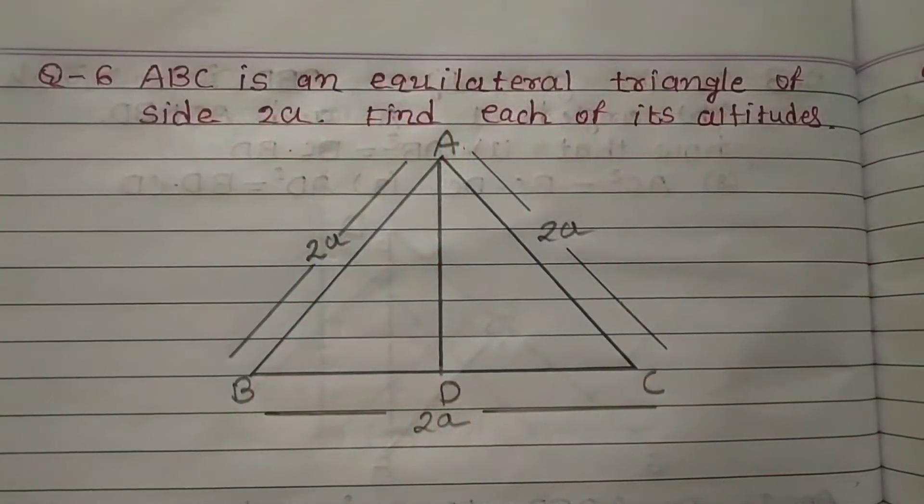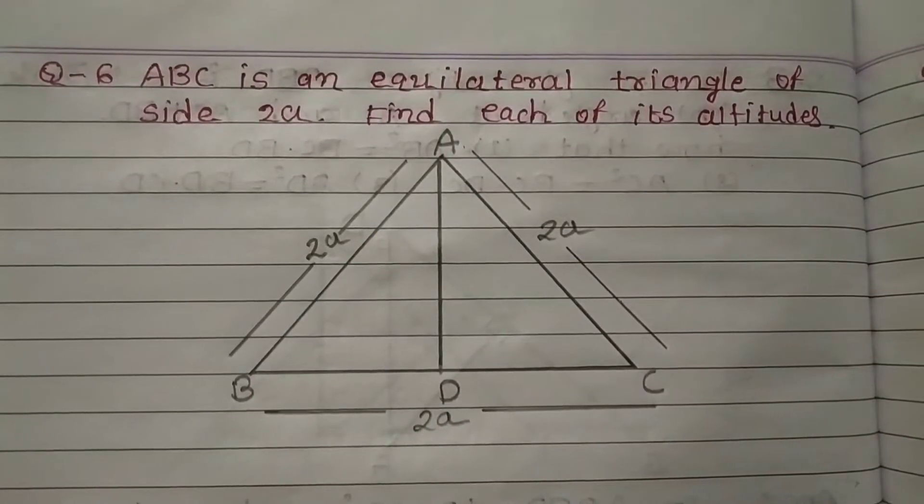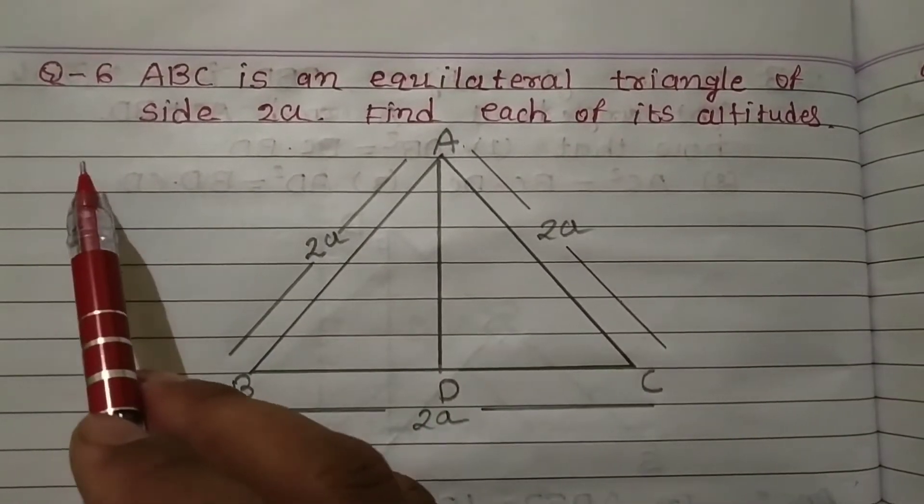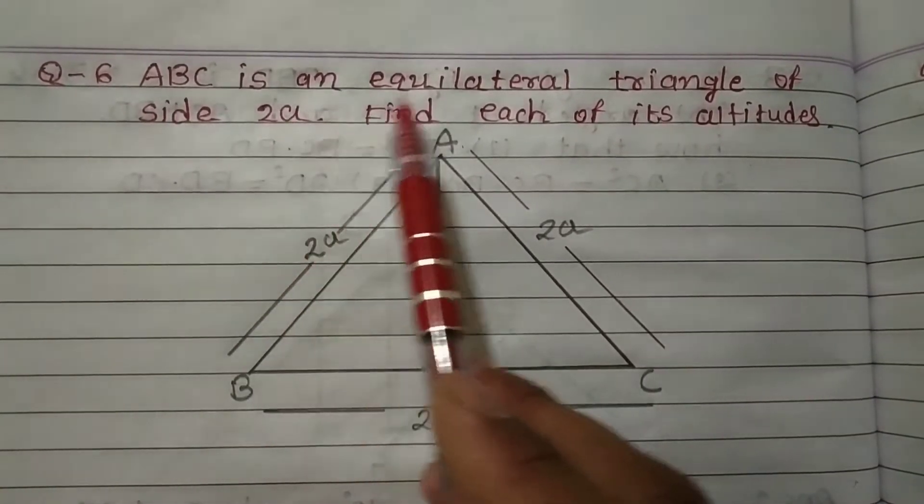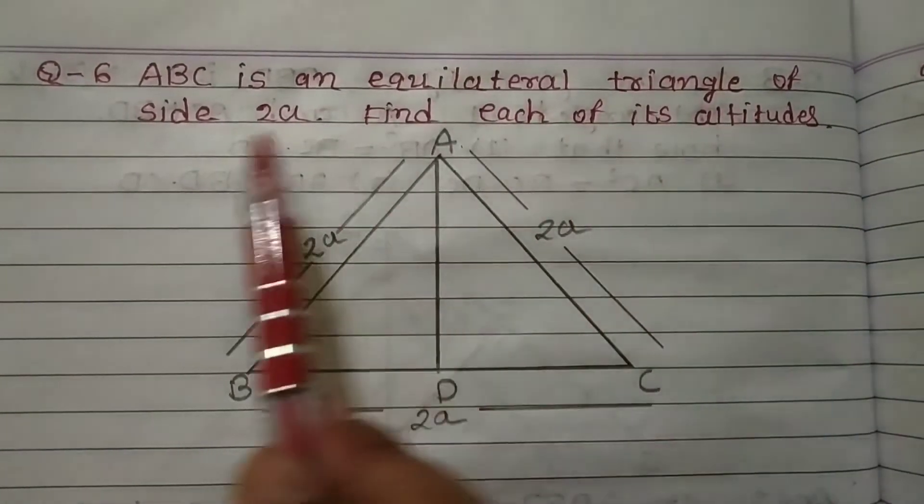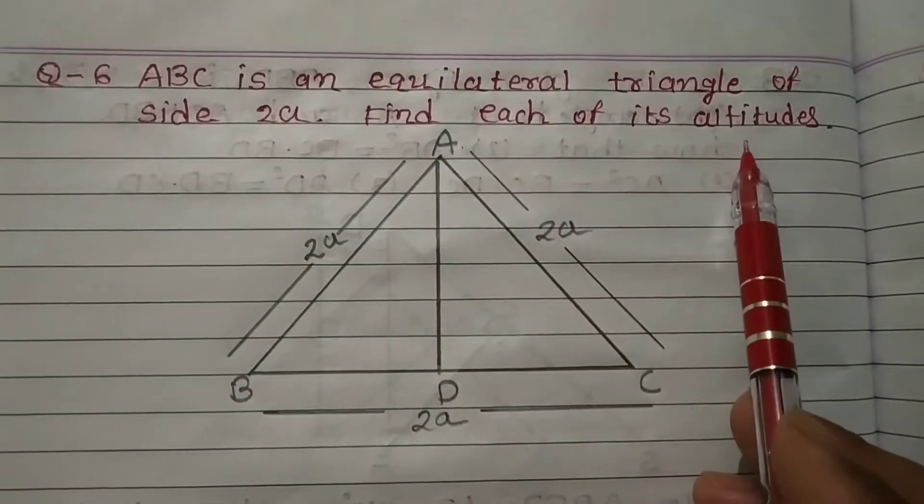Good morning viewers, welcome to my YouTube channel. In this video, we are going to see question 6 of Exercise 6.5: ABC is an equilateral triangle of side 2a. Find each of its altitudes.